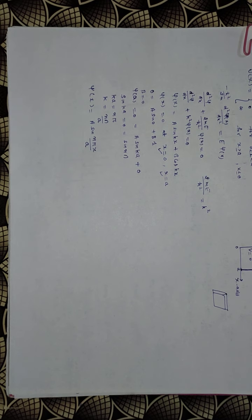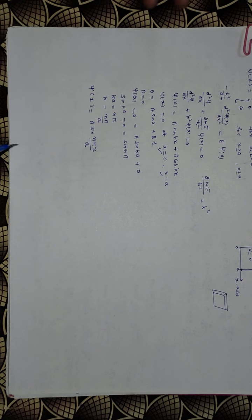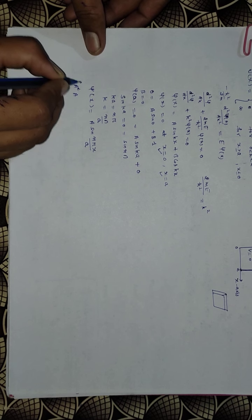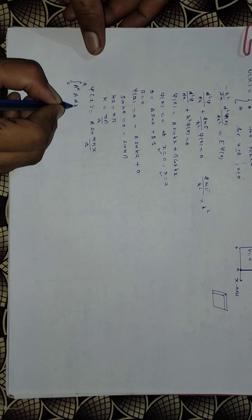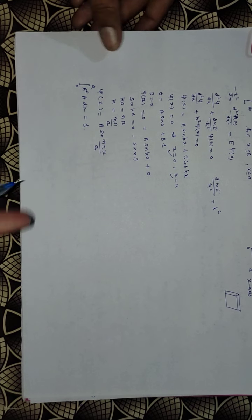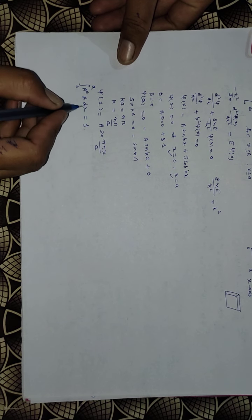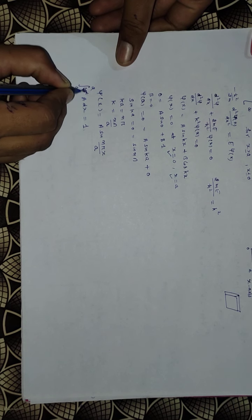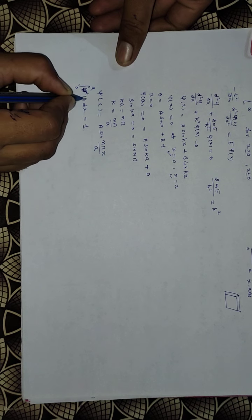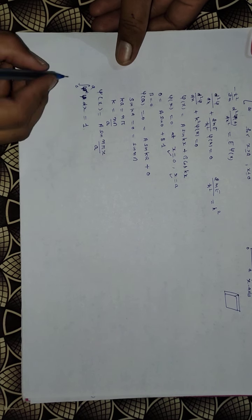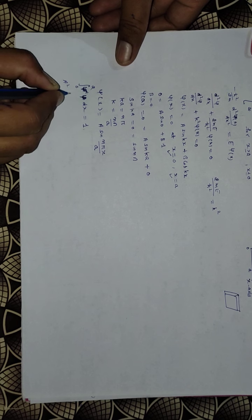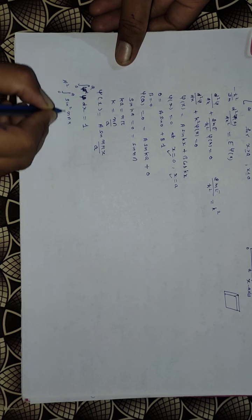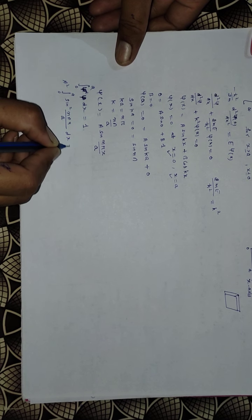Here A is the normalization constant. Applying the normalization condition: the integral from 0 to A of ψ*(x)·ψ(x) dx = 1. So A² times the integral from 0 to A of sin²(nπx/A) dx = 1. Using the identity sin²(θ) = (1 − cos(2θ))/2, this becomes A²/2 times the integral from 0 to A of [1 − cos(2nπx/A)] dx = 1.